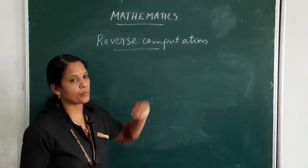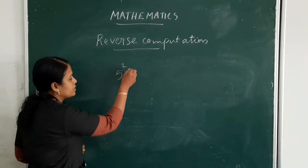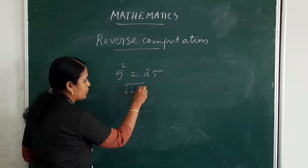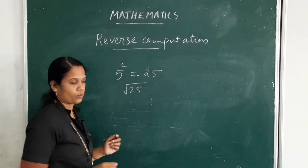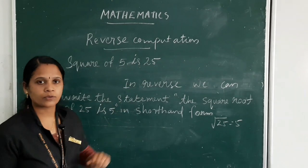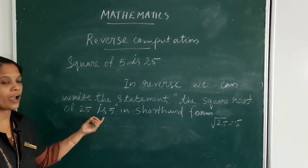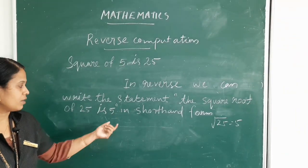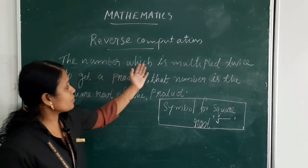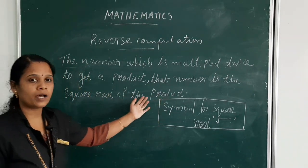Next topic is reverse computation. We usually calculate the square of 5, which equals 25. The square root of 25 is 5. This is the symbol of square root. Again, square of 5 is 25; in reverse, we can write: the square root of 25 is 5. The number which is multiplied twice to get a product — that number is the square root of the product.